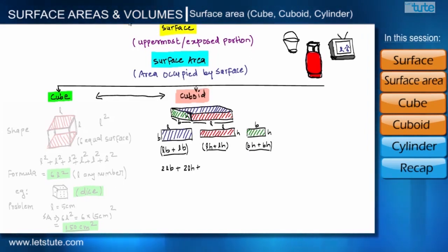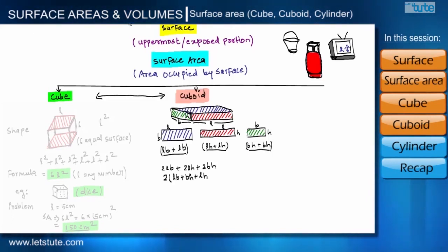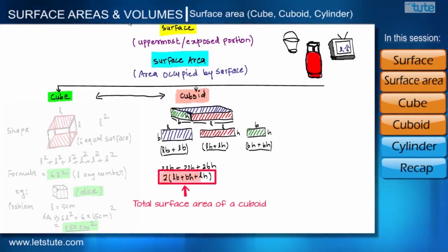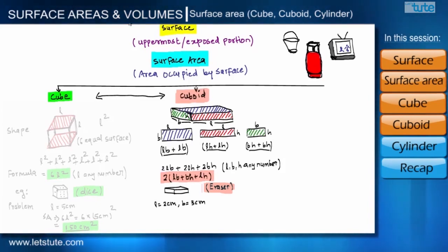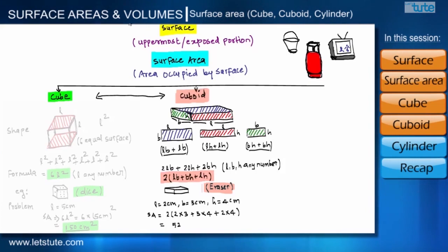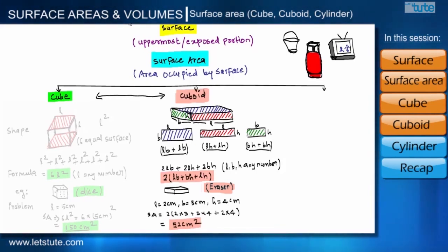So our formula becomes 2LB + 2LH + 2BH, and taking 2 as a common factor we can write it as 2(LB + BH + LH). This is the total surface area of a cuboid with dimensions L, B, and H. An eraser is the best example of a cuboid. For an eraser with length 2 cm, breadth 3 cm, and height 4 cm, using the formula gives a total surface area of 52 cm².